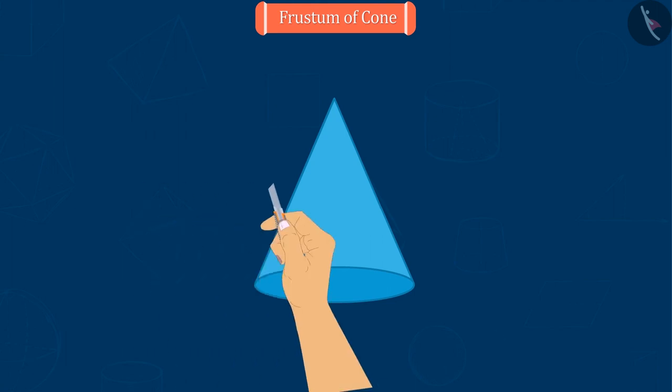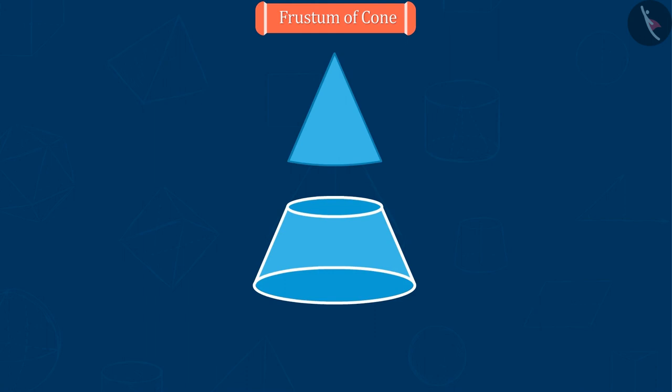If a cone is cut horizontally, it gives one frustum of a cone. Today we will learn about this.